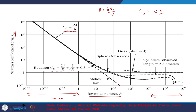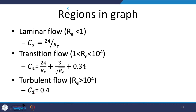On the graph with coefficient of drag on the y-axis and Reynolds number on the x-axis, we see three datasets: spheres observed, the relevant equation, and the Stokes' law line. In the laminar flow conditions there is good agreement between observed and the equations. Divergence becomes apparent in transitional and turbulent conditions. In Type 1 settling we are concerned with laminar flow only, and this applies to spheres.